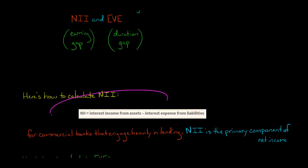Here's how you calculate net interest income. You take the interest income from assets and subtract interest expense from the bank's liabilities. So it's pretty straightforward.